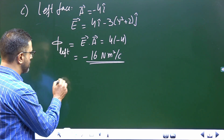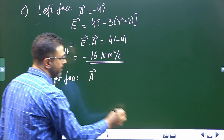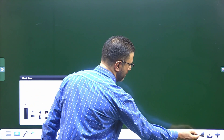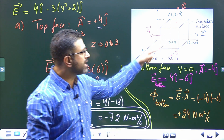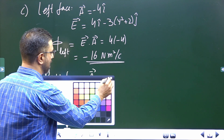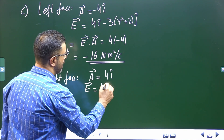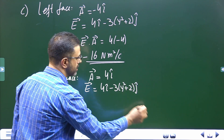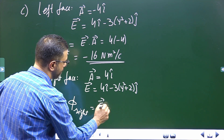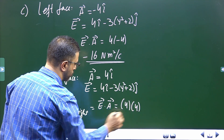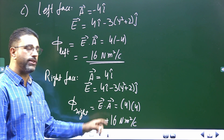For the right face, the outward normal is in the positive x direction, so the area vector is A = +4i. The field is the same: 4i minus 3(y² + 2)j. Flux = E·A: x component of E is 4, x component of A is 4, so flux through the right face = +16 N·m²/C. Left face flux is −16 and right face flux is +16.